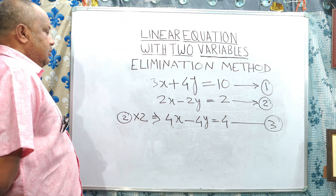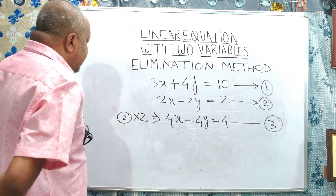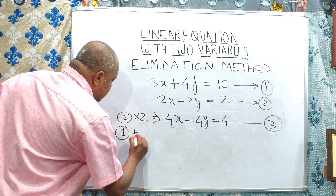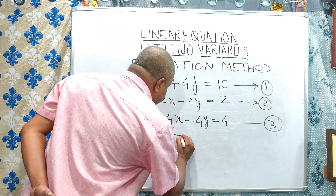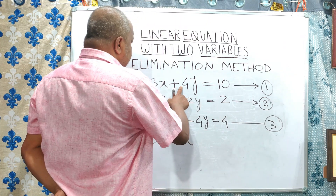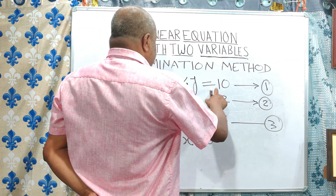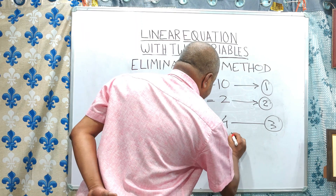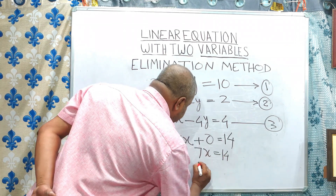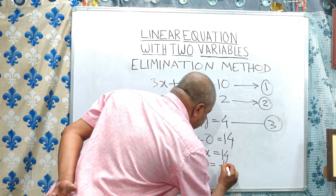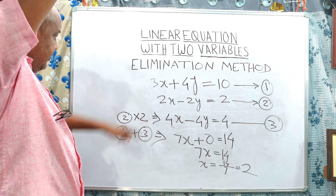Now, if we add equation 1 and equation 3, we get 3x plus 4x equals 7x, and 4y minus 4y equals 0. So 7x is equal to 10 plus 4, which is 14. Therefore x is equal to 14 by 7, which equals 2. We are getting x is equal to 2 by adding equations 1 and 3.